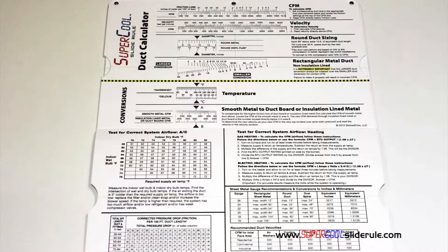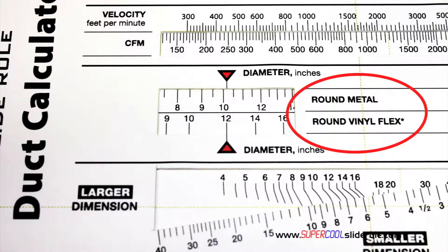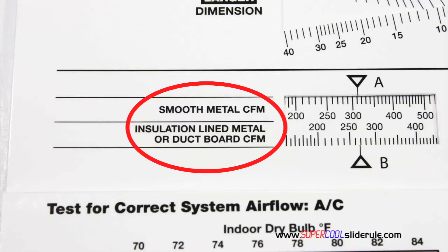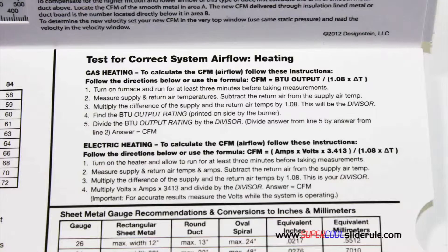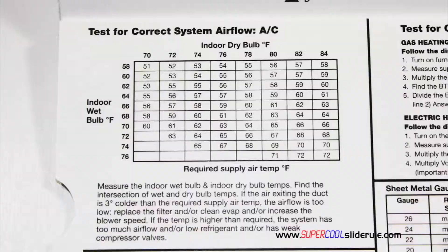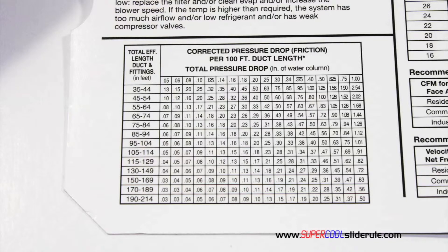Inside is packed with even more information. It performs sizing of both metal and flexible duct. It has the only direct reading conversion from smooth metal to insulation-lined metal we've ever seen. The majority of technicians have never been taught that if the insulation is on the inside of the ductwork, you cannot size it with a regular duct calculator. It has step-by-step directions for determining airflow through a gas furnace, electric furnace, or an air conditioning unit. It has pressure drop multipliers for ductwork, as well as recommended velocities.